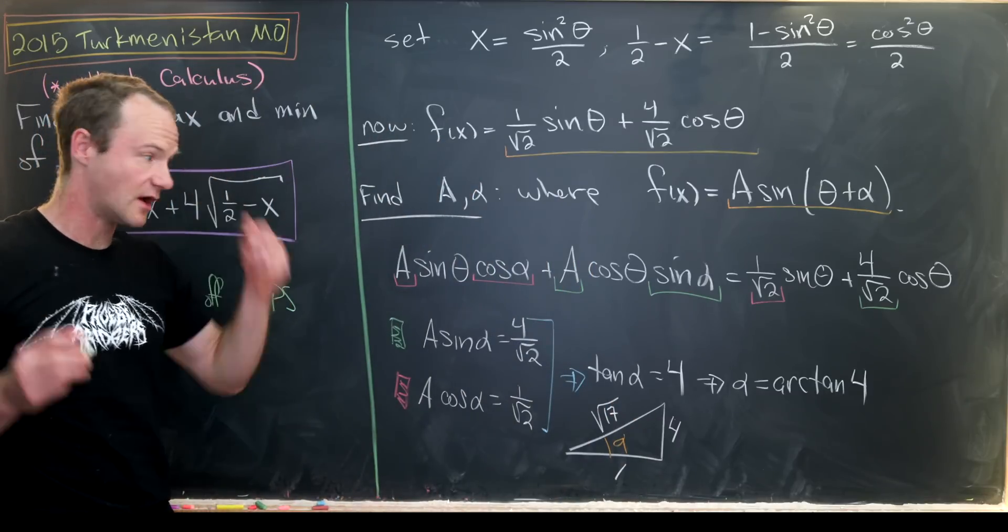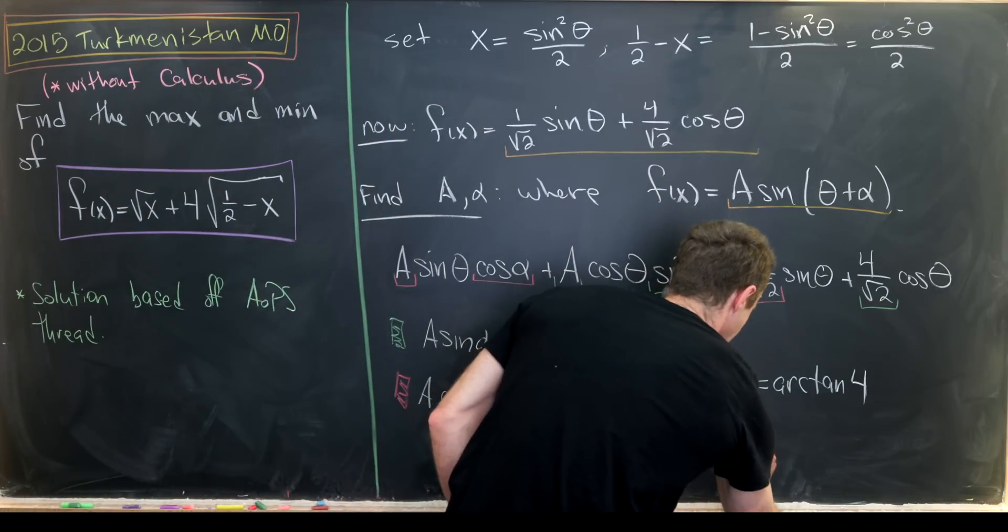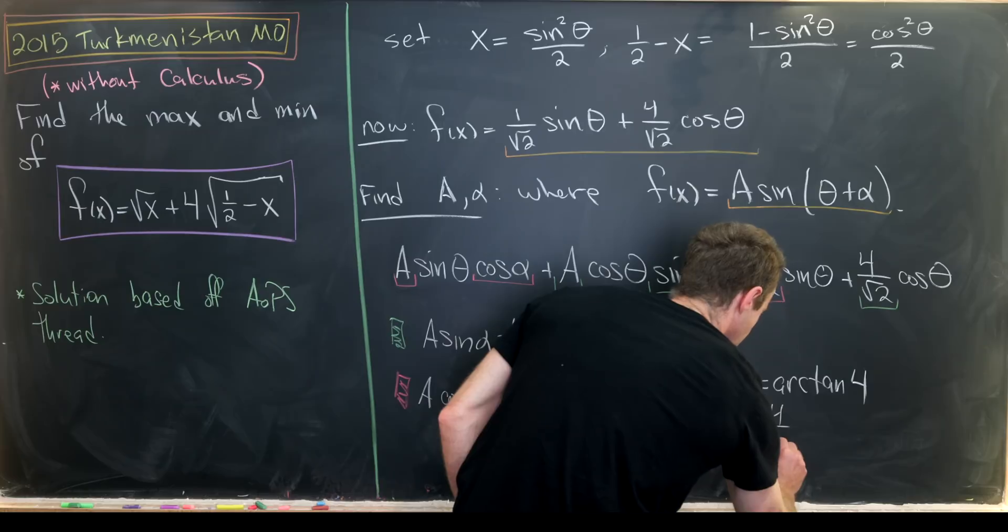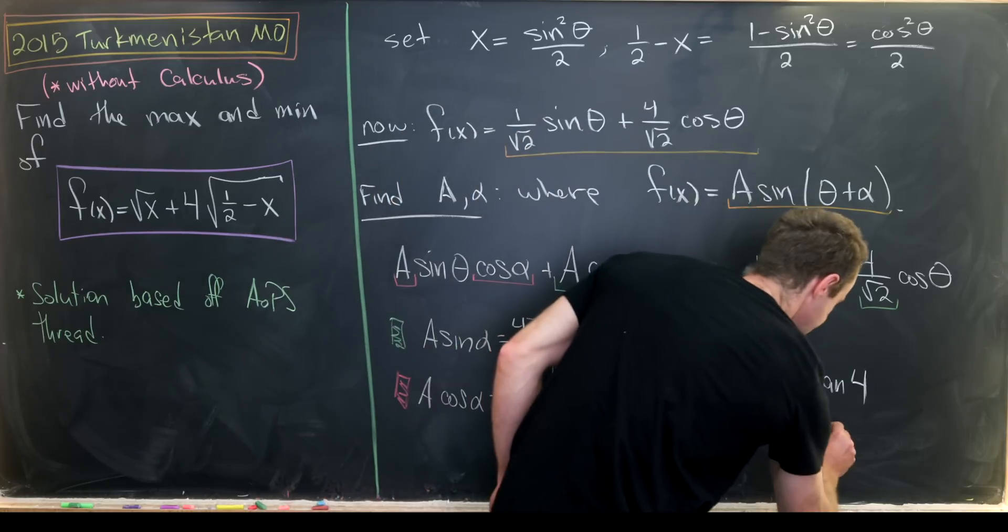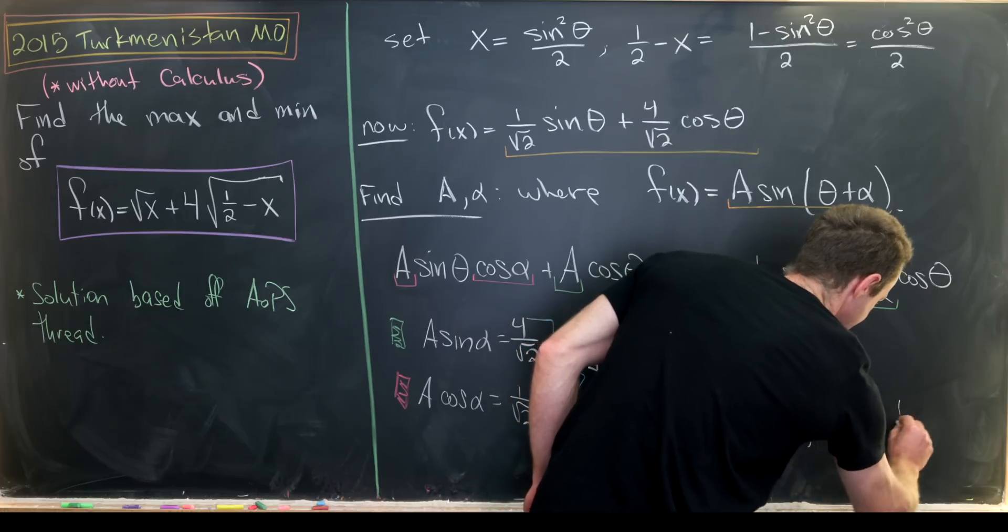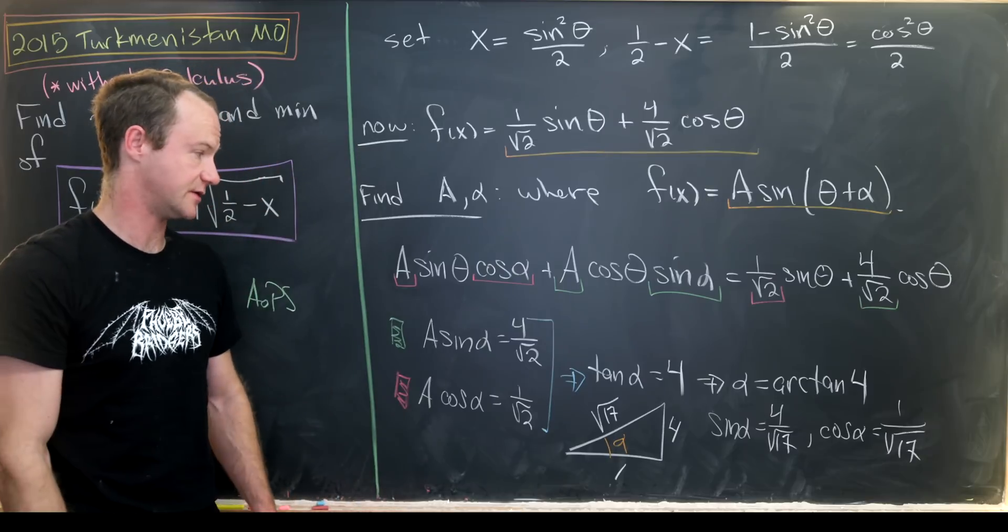So now we can really just read off the value of the cosine and the sine. So the sine of alpha is four over root 17 because it's opposite over hypotenuse. Whereas the cosine of alpha is one over the square root of 17 because it's adjacent over hypotenuse.